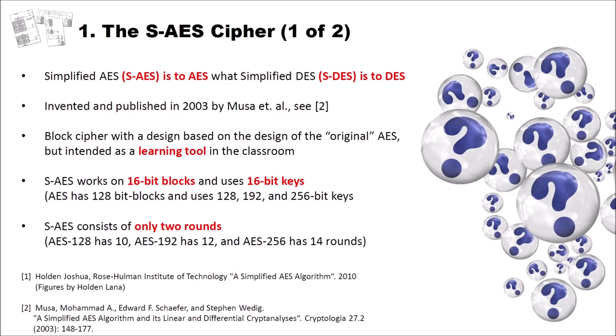SAES is a block cipher with a design based on the design of the original AES, but it's intended as a learning tool in the classroom. SAES works on 16-bit blocks and uses 16-bit keys. In comparison, AES has 128-bit blocks and uses 128, 192, and 256-bit keys. SAES consists of only two rounds, compared to AES-128 which has 10, AES-192 which has 12, and AES-256 which has 14 rounds.